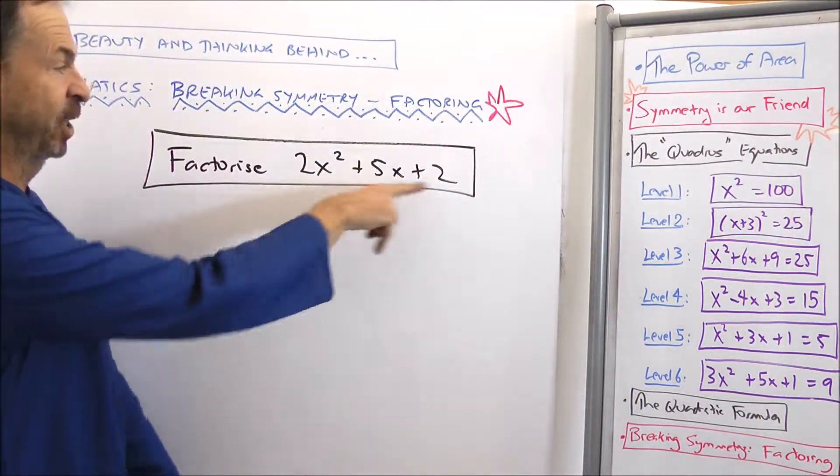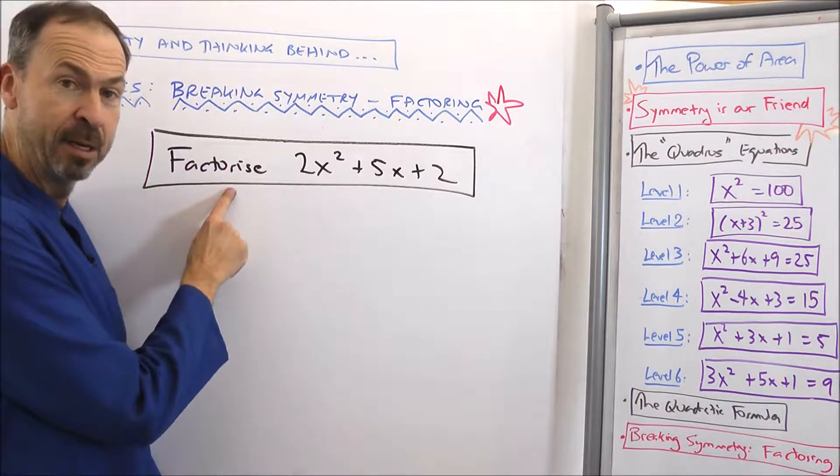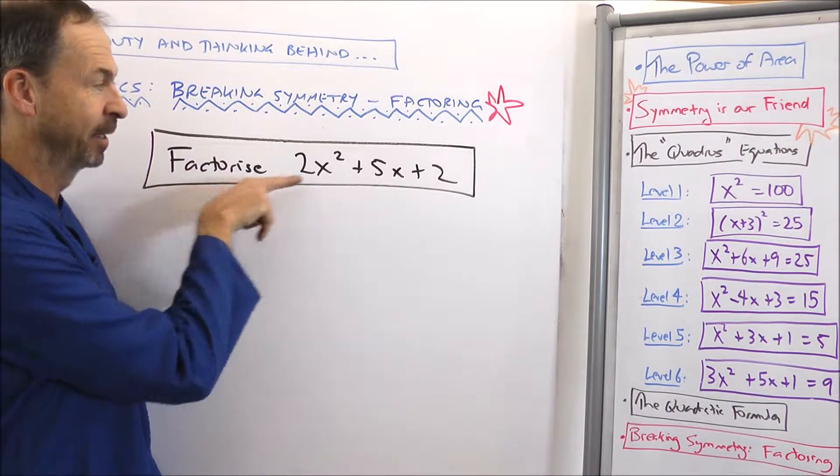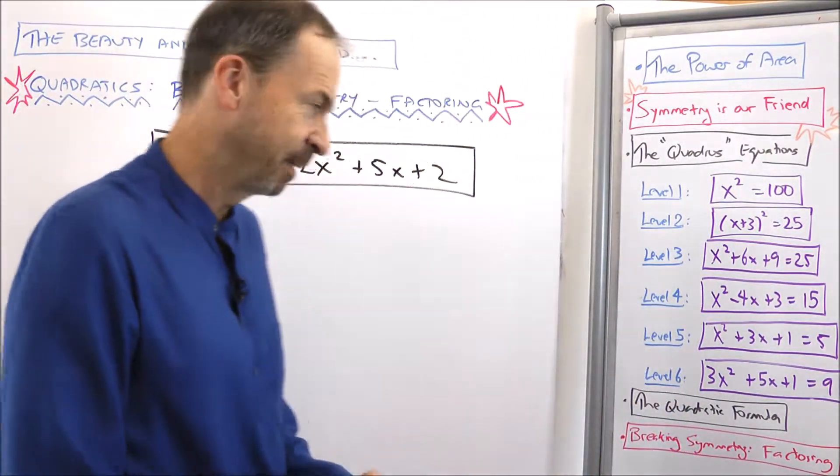Now I didn't bother writing equal zero, area zero. I just want to know what rectangle that is, if I can do it. So people call that factoring. Can I factorize 2x² + 5x + 2 is what they say in Britain. In the US they'll just say, can you factor 2x² + 5x + 2? It's just words. All right, so here's what I'm going to do.